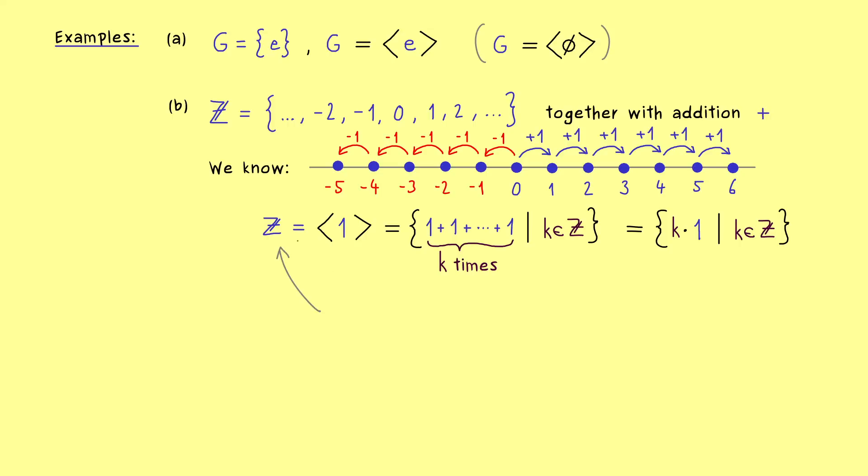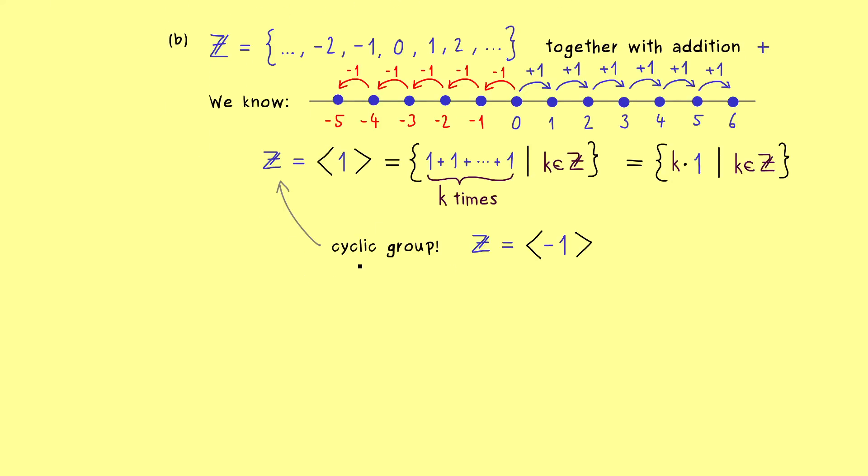But now please don't forget our important result here: the integers with the ordinary addition form a cyclic group. And moreover, we also see that our single generator does not have to be uniquely determined. Namely, the number minus 1 does exactly the same thing as the number plus 1. However, you should see for the integers, these are the only two options for the generator, because these are the only two numbers where we can actually hit all the other numbers. Still an important result to remember: for a cyclic group, we could have some freedom for the choice of the generator.